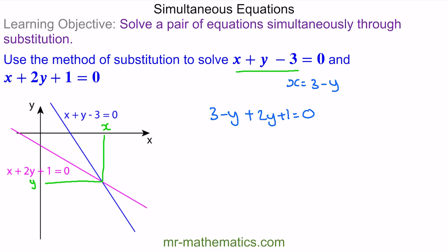We can simplify this by collecting the like terms. So we have 3 plus y plus 1 equals 0. So 4 plus y is 0, which means y is negative 4, which is here.